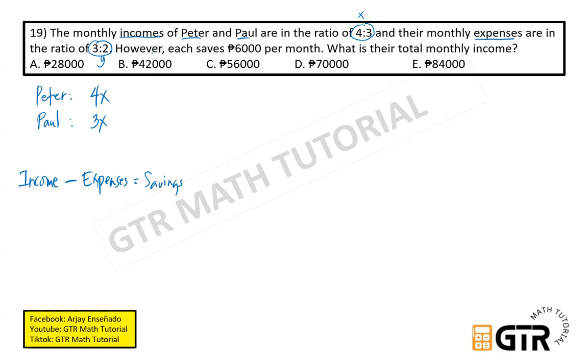The formula is income minus expenses. What remains after expenses is the savings. However each saves 6,000. So 6,000 is their savings. We subtract expenses from income. Peter's income is 4x. Paul's is 3x since their ratio is 4 is to 3. Now let's subtract their expenses. The expenses are in ratio 3 is to 2, so y is the constant of variation. Peter is 3y and Paul is 2y. Their savings each save 6,000, equal to 6,000 each. These are our two equations, equation number 1 and equation number 2.